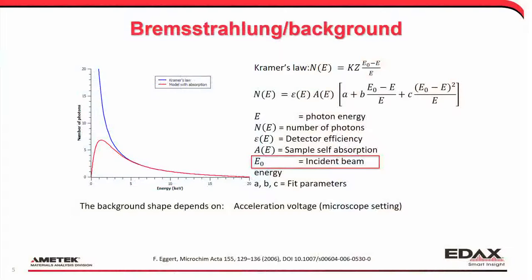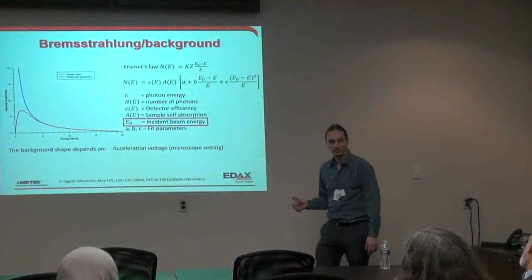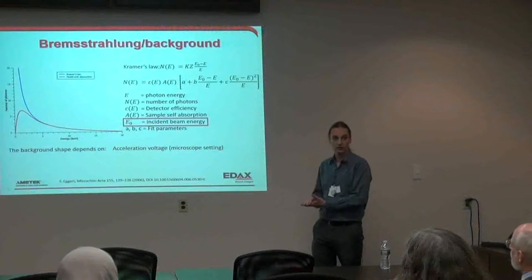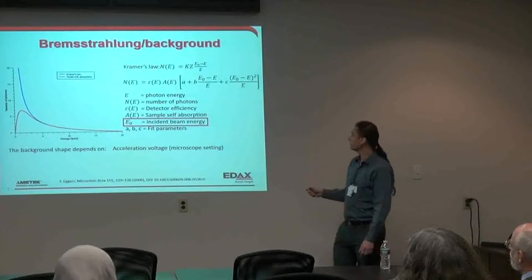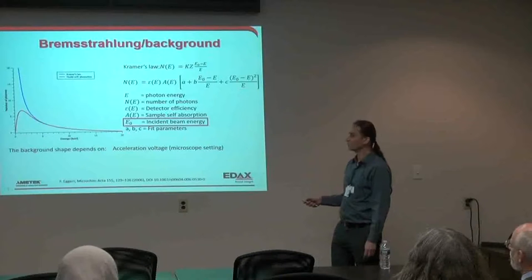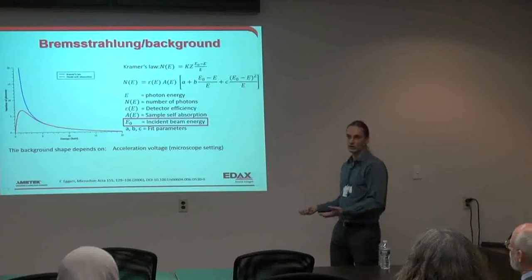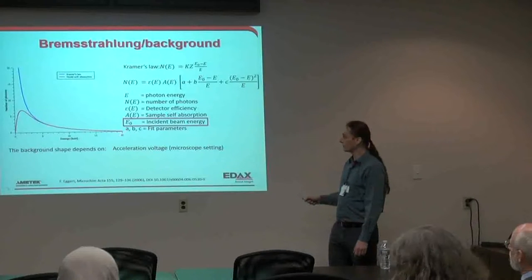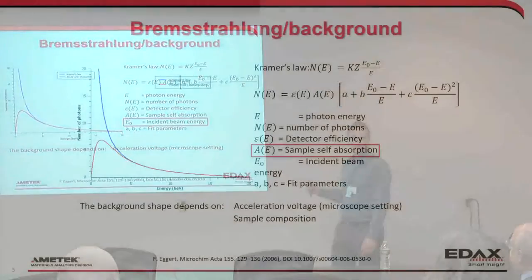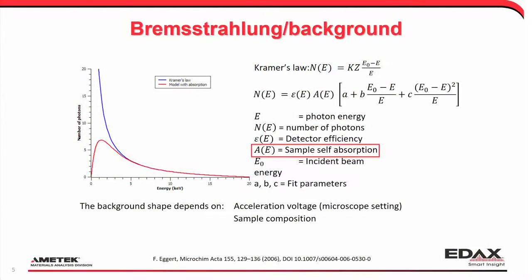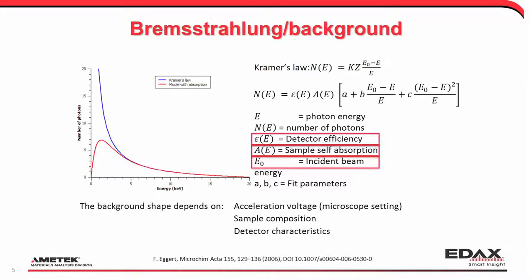What we see on the detector — the background shape — will depend on our excitation voltage. Depending on the incident beam energy, or more precisely the landing energy on the sample, the background will look different. From the equations, it tails off to the incident beam energy — we can't generate x-rays with energy higher than what we put in. In this case, this corresponds to a beam voltage of 20 kV. The background also depends on the sample composition and on your detector — how efficient it is at different energies, what kind of window you have.